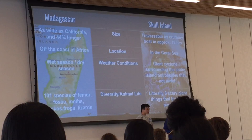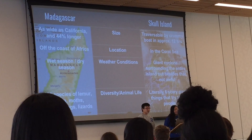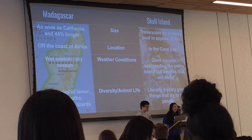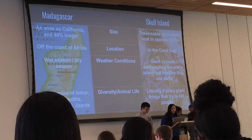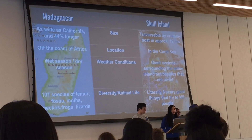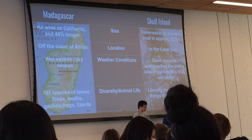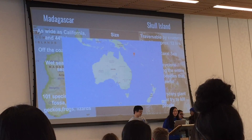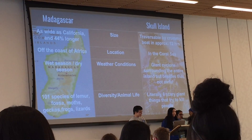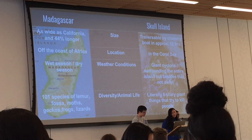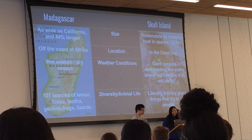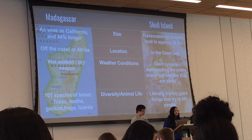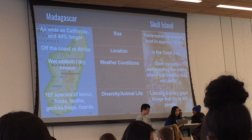Here's a comparison of Madagascar and Skull Island. The main difference is size: Madagascar is as big as California while Skull Island is pretty walkable in the movie. Madagascar is off the coast of Africa, while Skull Island is in the Coral Sea off the coast of Australia, based on coordinates from DiscoverSkullIsland.com. Madagascar has a wide variety of climates due to its size, while Skull Island's small size limits climate variety, and it also has a giant cyclone surrounding it. Madagascar is also a lot more diverse than Skull Island.